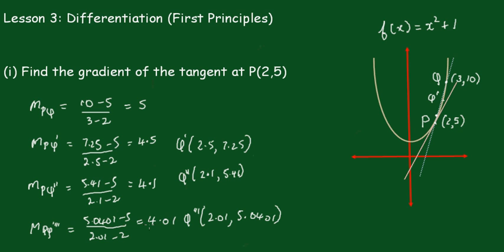You can see the gradient is getting closer and closer to 4. This is the limit position of the secant, so the gradient of the tangent equals 4.